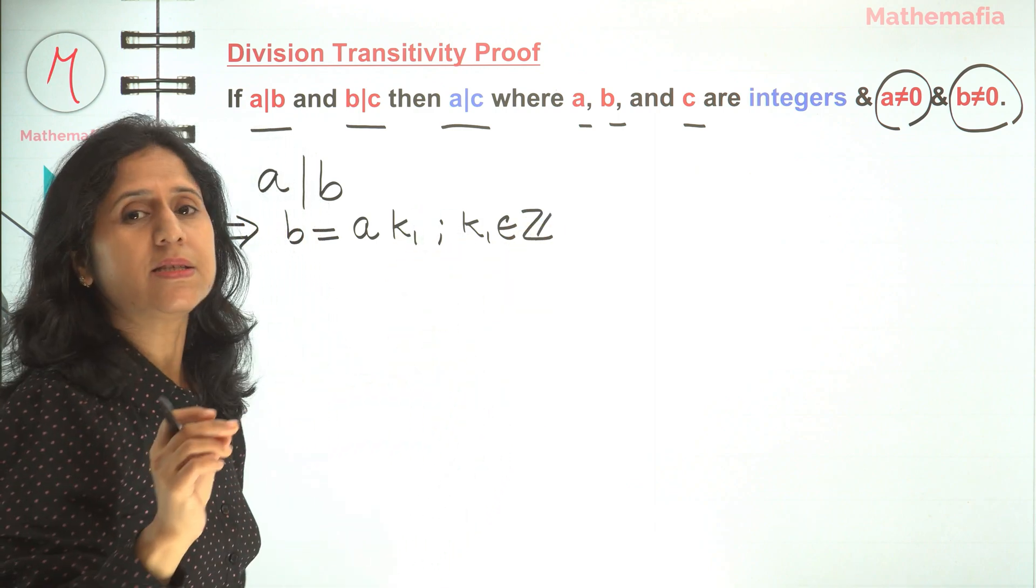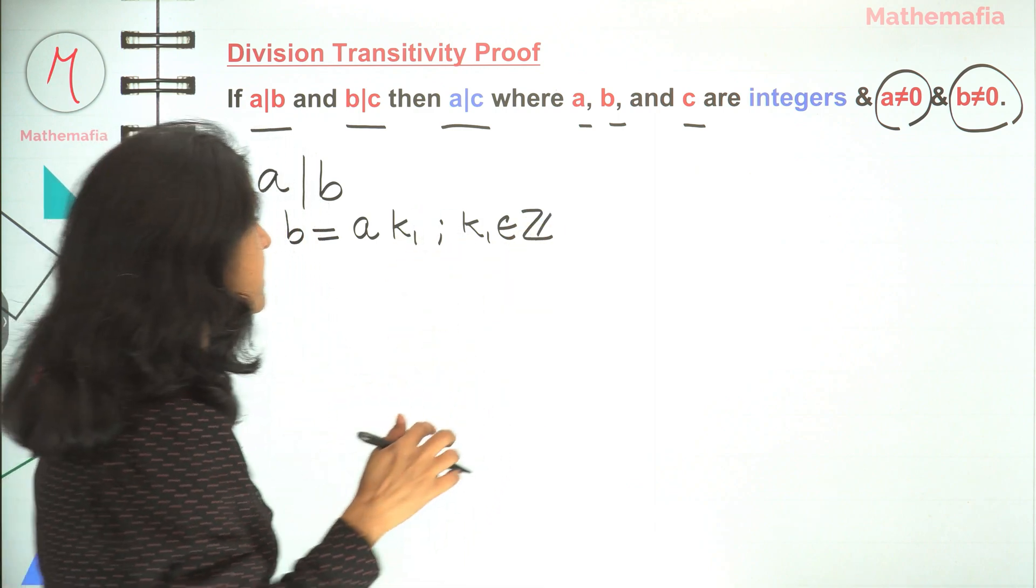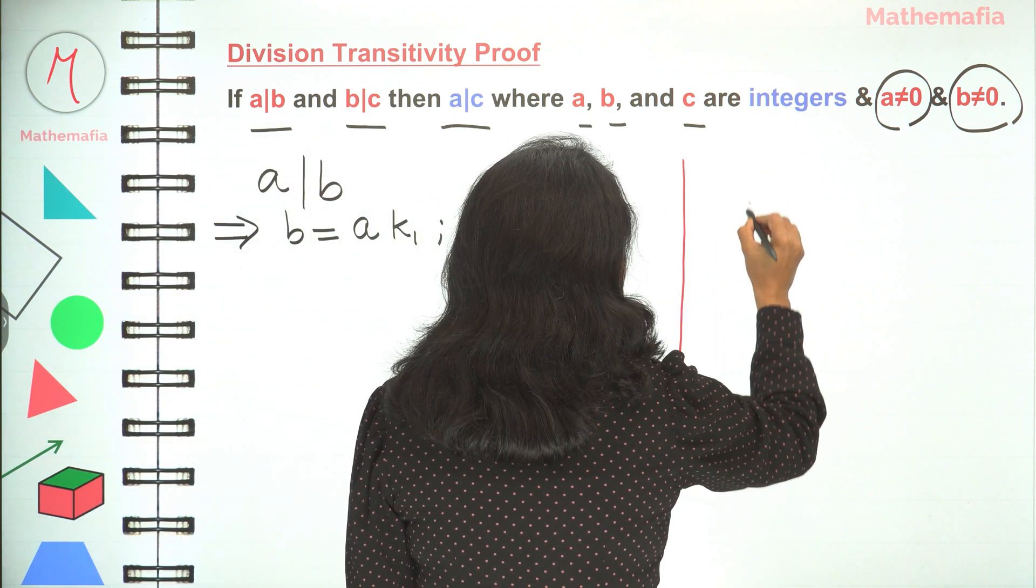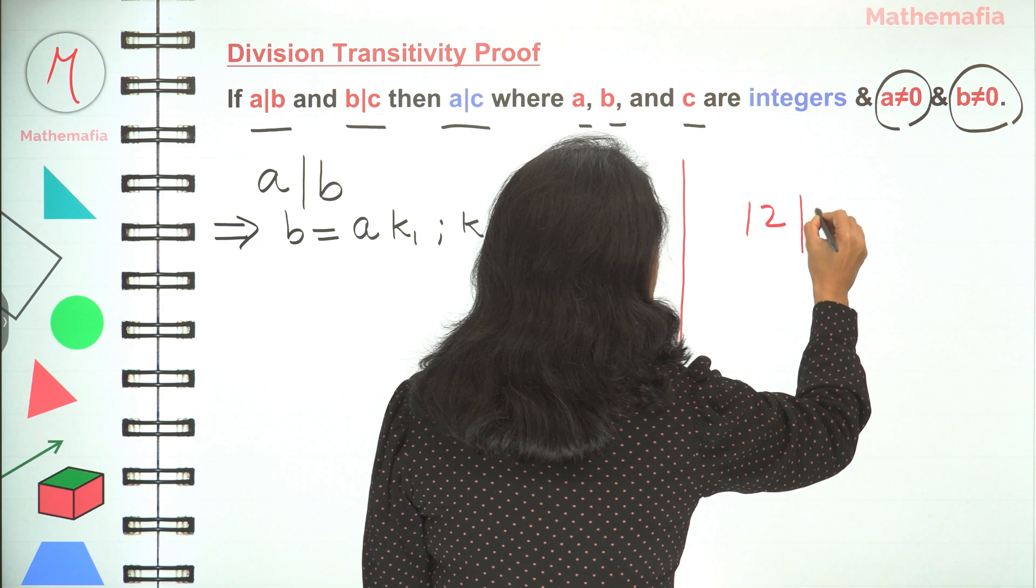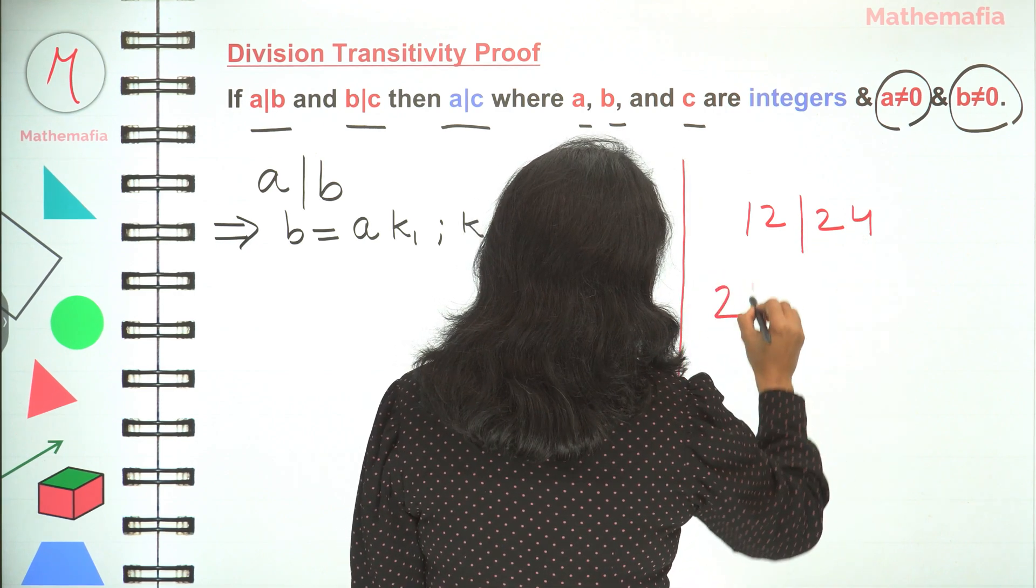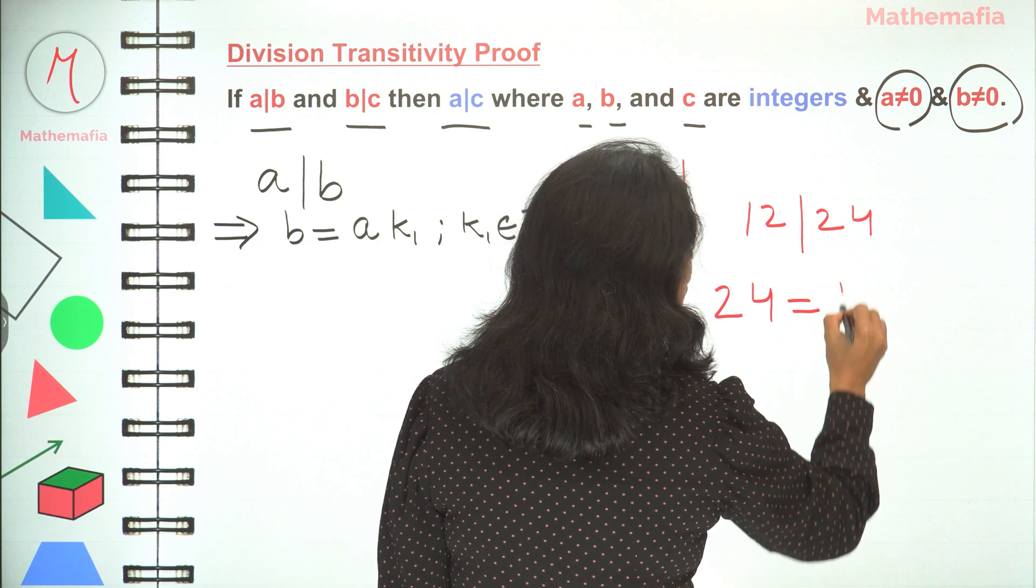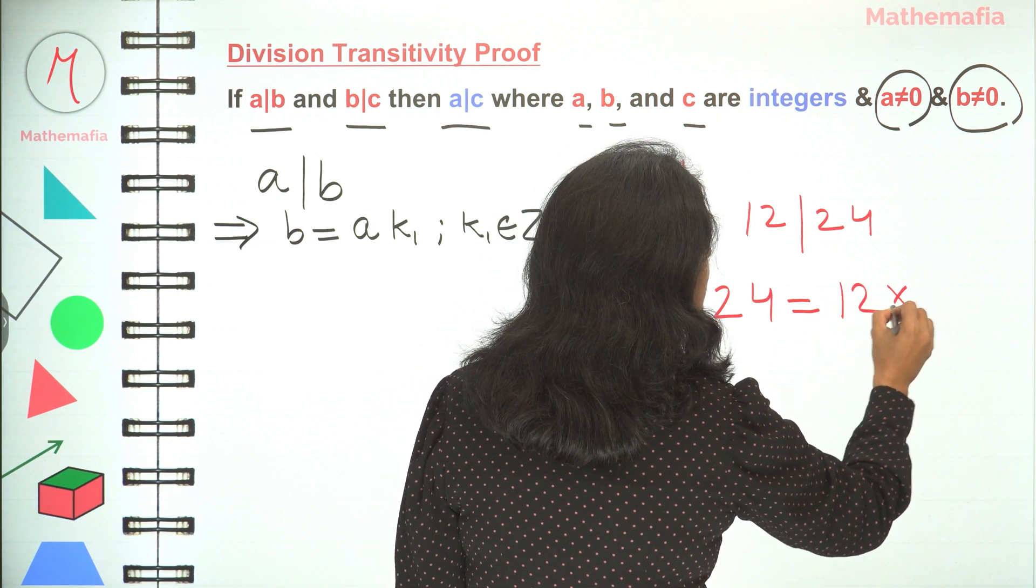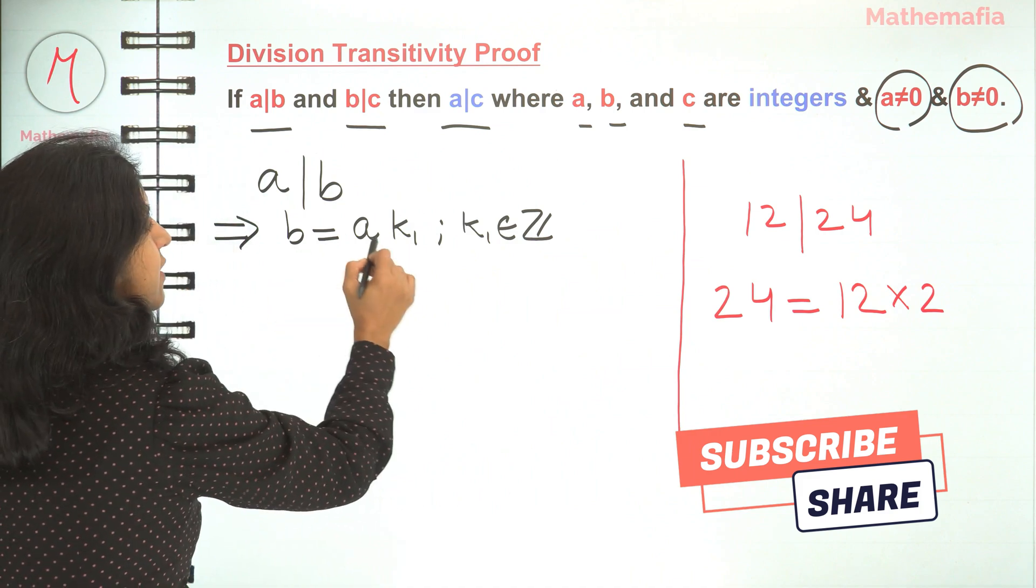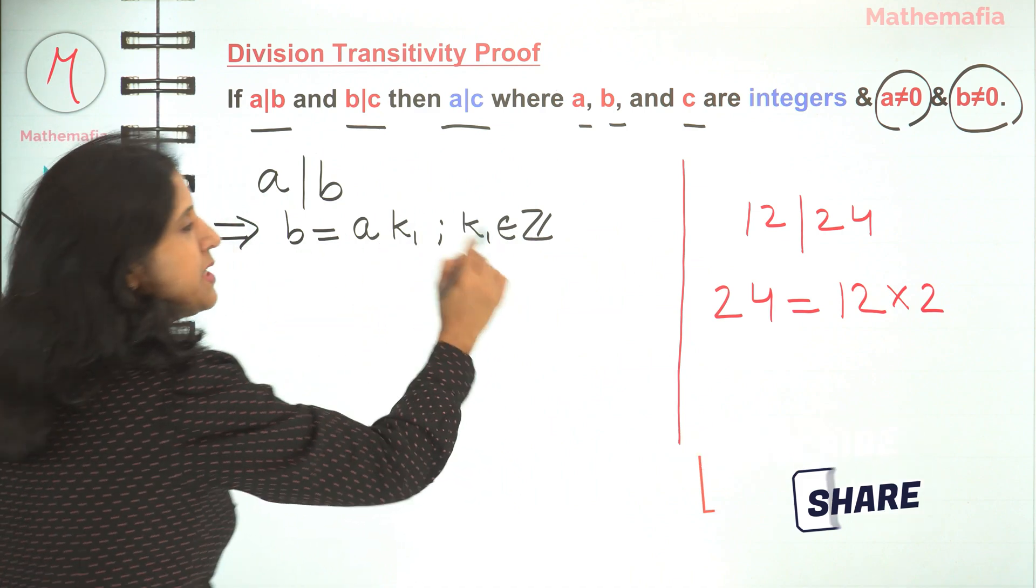To understand this a little more, let's consider an example. When we say that 12 divides 24, which means 24 can be written as 12 times some integer, which in this case is 2. So that's why we have written b equals a times k1 for some integer k1.